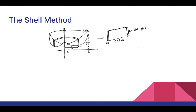We're going to look at how we use the Shell Method to determine the volume between two functions, f of x and g of x, revolved around the y-axis. The basic idea is that if we take this area between f of x and g of x and revolve it around the y-axis, we get a volume. We can break this volume up into cylindrical shells of thickness dx.